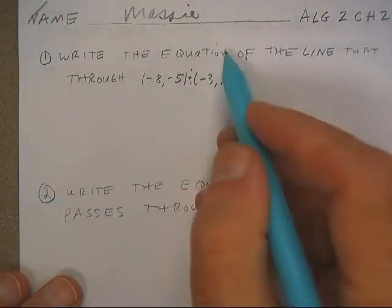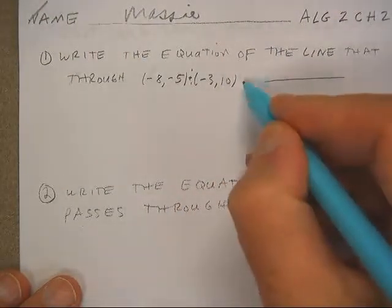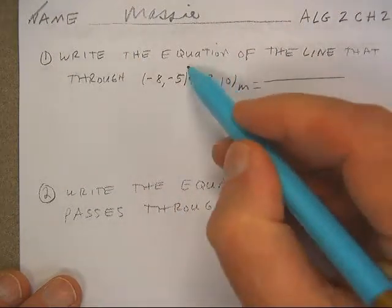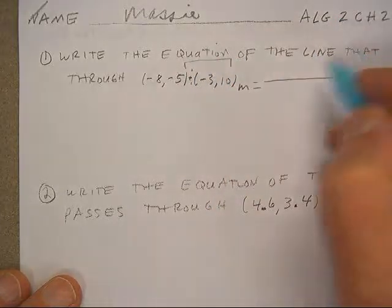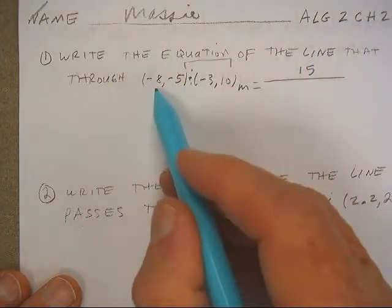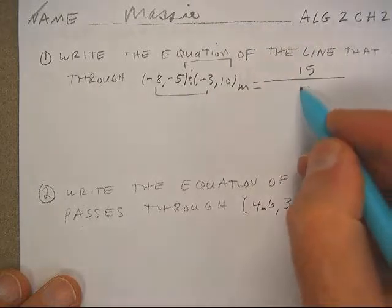So this says find the equation of the line. Okay, so we have to know the slope to do that. So that looks like that's up 15. This is up 5.